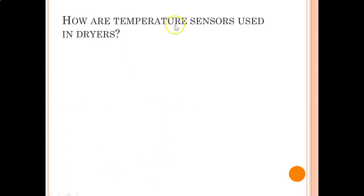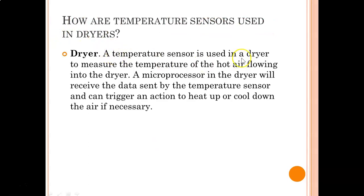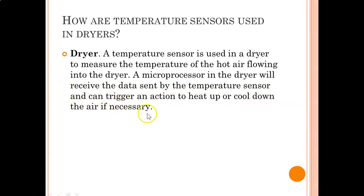How are temperature sensors used in dryers? Temperature sensors are used in dryers to measure the temperature of the hot air flowing into the dryer. A microprocessor in the dryer will receive the data sent by the temperature sensor and can trigger an action to heat up or cool down the air if necessary.